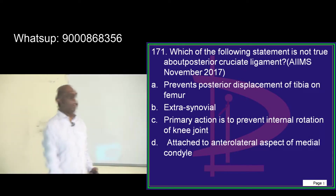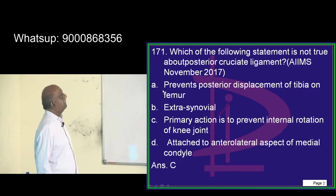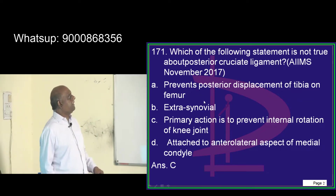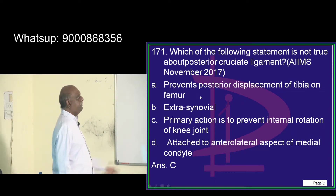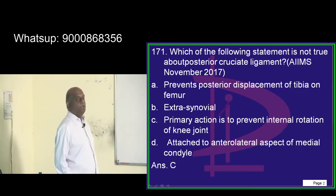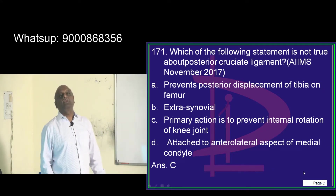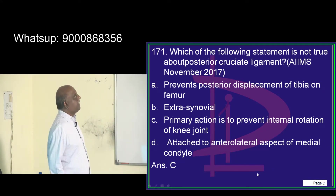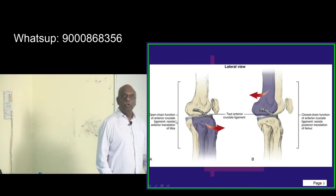The posterior cruciate ligament — what is its function? The posterior cruciate ligament prevents the posterior displacement of the femur. It is extrasynovial. It is attached to the anterolateral aspect of the medial condyle, which is what you have to basically remember.